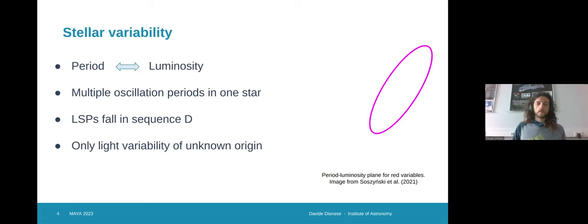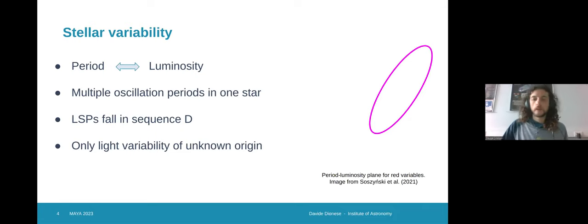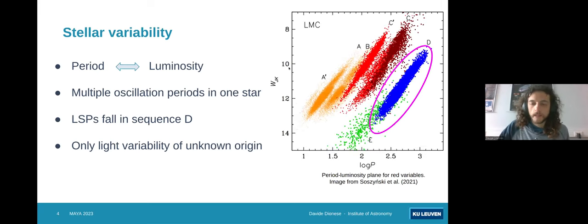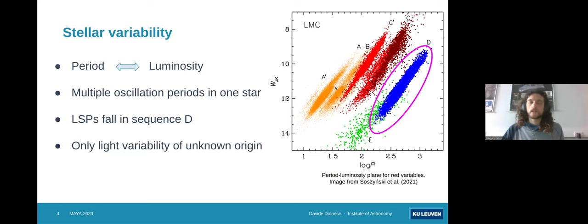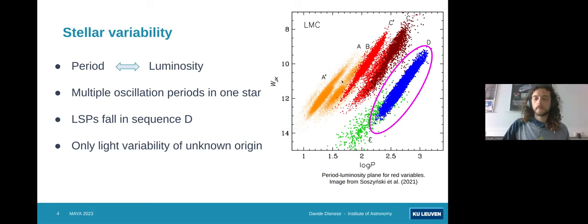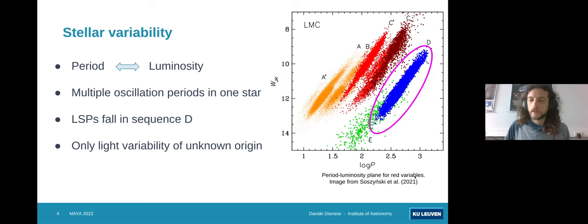When we talk about stellar variability, we can usually identify a relationship between the period of the oscillations we observe and the luminosity of the star itself. If we look at the graph on the right-hand side, we have luminosity on the y-axis and period on the x-axis, and as we can see, most of the oscillations fall into one of these sequences. It's important to notice that one star can present more than one period, so it can oscillate with more than one frequency and therefore can be depicted more than once in this graph. The long secondary periods form sequence D here on the right-hand side, which stays at the longest periods.